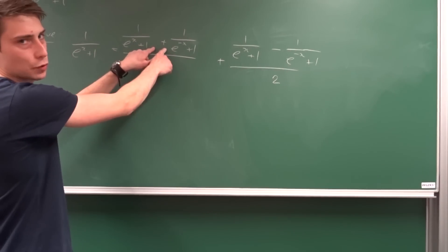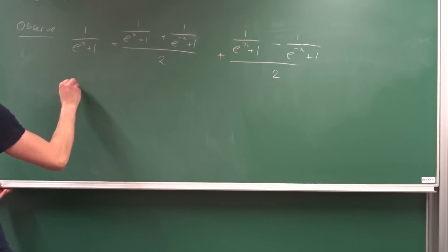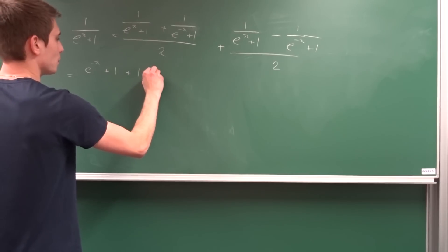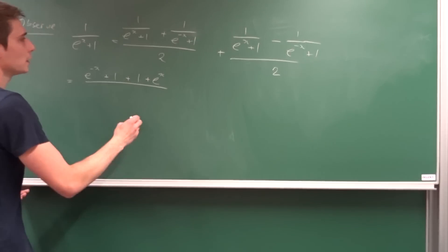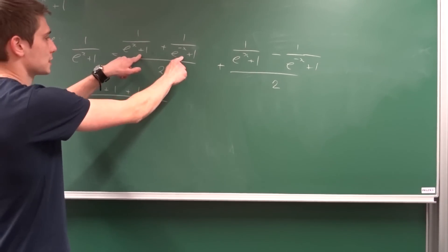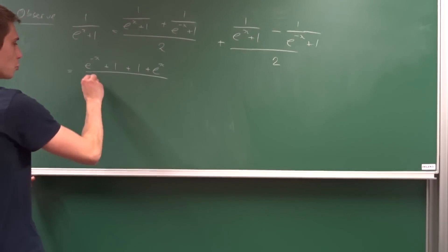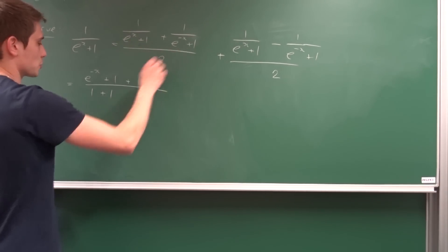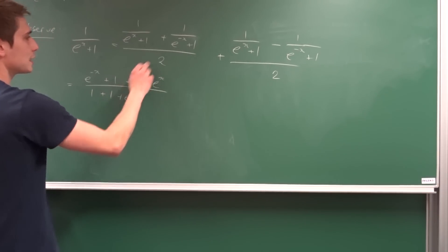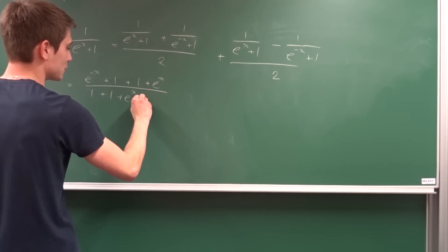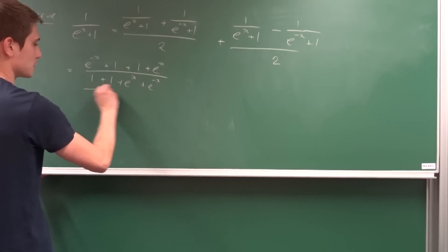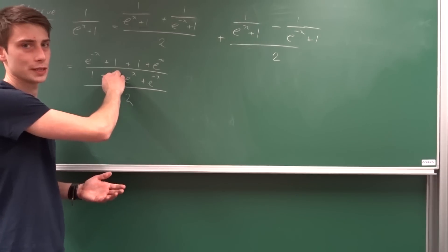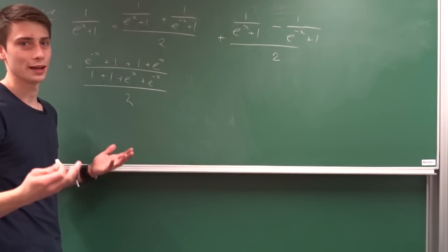Bringing the first pair of fractions together: the numerator becomes e to the minus x plus 1 plus 1 plus e to the x. The denominator is e to the minus x times e to the x, which is 1, plus e to the x plus e to the minus x plus 1, all over 2. The numerator and denominator of this first part are equal, so it simplifies to 1.